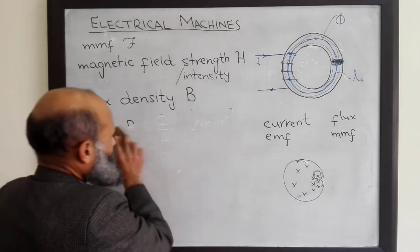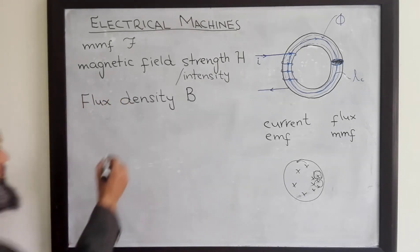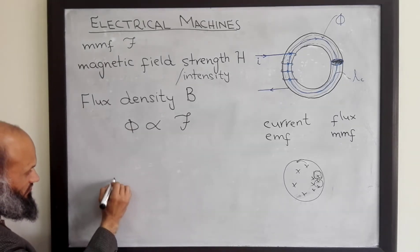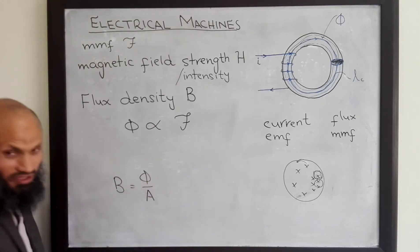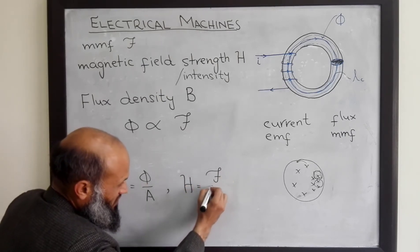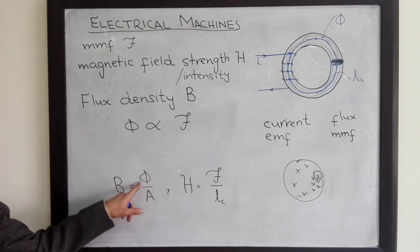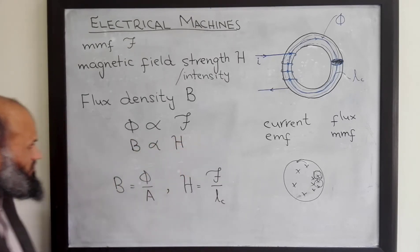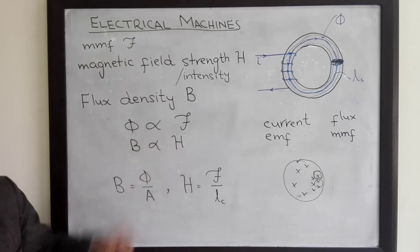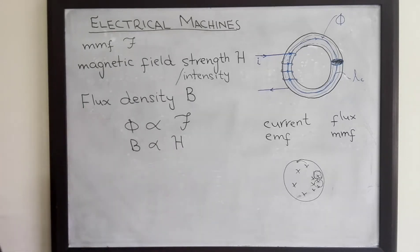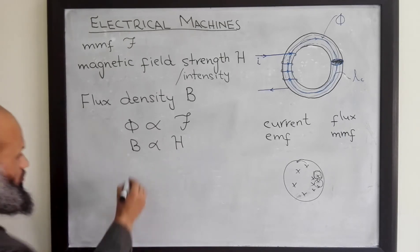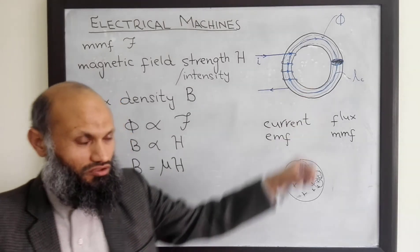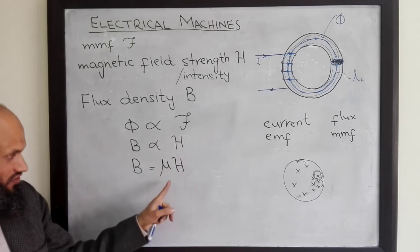We know that more is the MMF, more will be the flux. Flux is proportional to MMF. Furthermore, flux density B is related to flux, and magnetic field strength H is related to MMF. Since B is proportional to flux and H is proportional to MMF, therefore B is proportional to H. The proportionality constant is denoted by mu, which is the property of the material used in the magnetic circuit. Different materials have different values of mu.